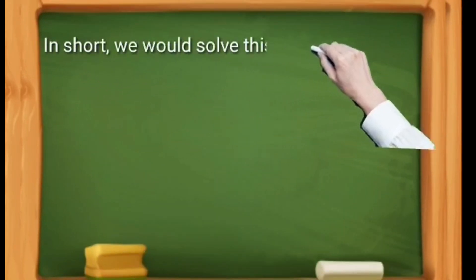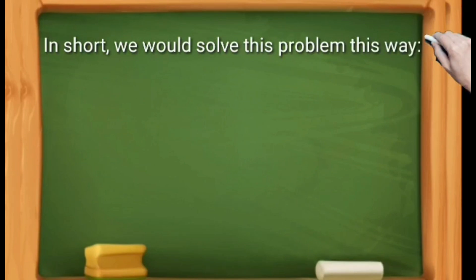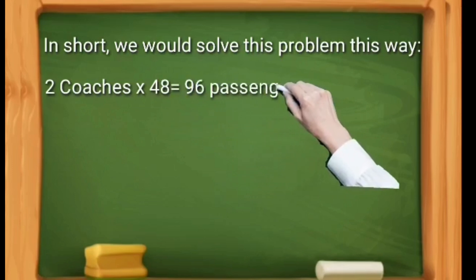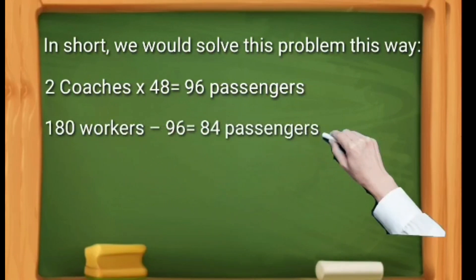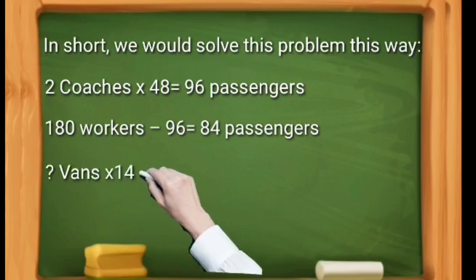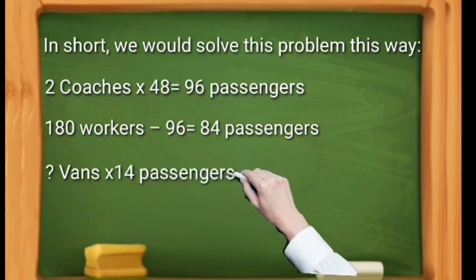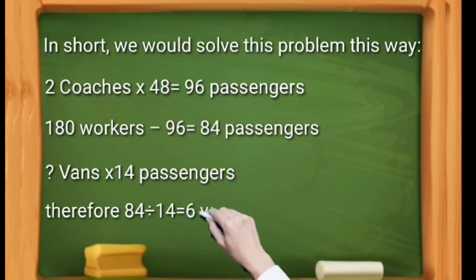In short, we would solve this problem this way. Two coaches can load 48 passengers each, so they can take 96 passengers. There are a total of 180 workers. After subtracting 96 from 180, you will need space for 84 passengers. Vans can take 14 passengers each. Therefore, when you divide 84 by 14, you will get an answer of 6. You need 6 vans.